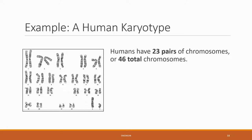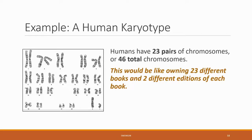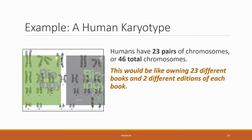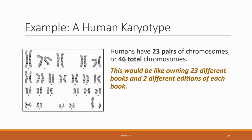Here we have an example of a human karyotype. Humans have 23 pairs of chromosomes, and since they're pairs, the total number of chromosomes — if you counted all of them — would equal 46. This would be like owning 23 different books with two different editions of each book, one from each parent. So humans are diploid: each unique chromosome has two copies to make a pair, for a total of 46 chromosomes in our library.